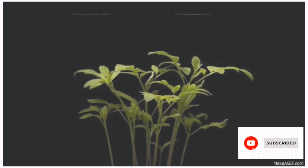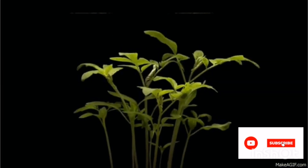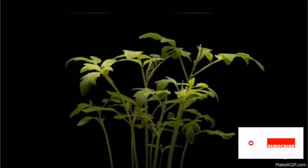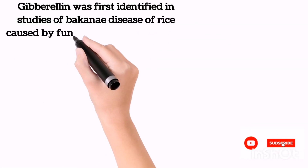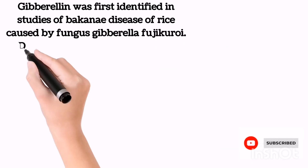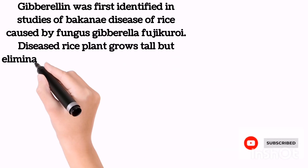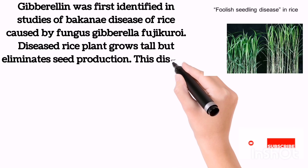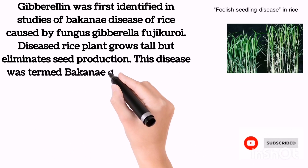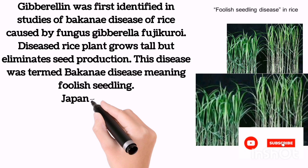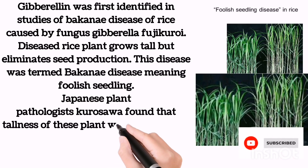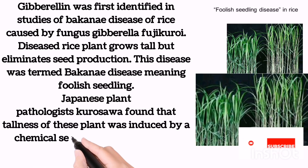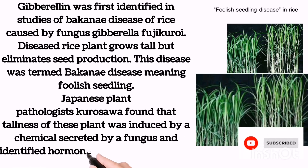Although gibberellins did not become known to American and British scientists until the 1950s, they had been discovered much earlier by Japanese scientists. Gibberellin was first identified in studies of bakanae disease of rice, caused by the fungus Gibberella fujikuroi. Diseased rice plants grow tall but eliminate seed production. This disease was termed bakanae disease, meaning 'foolish seedling.' Japanese plant pathologist Kurosawa found that the tallness of these plants was induced by a chemical secreted by the fungus, and identified the hormone termed gibberellin in 1926.